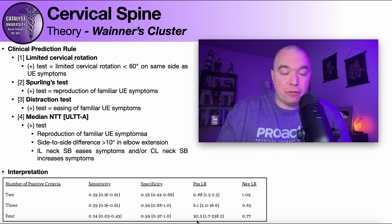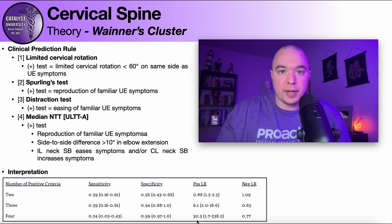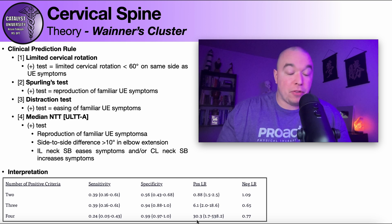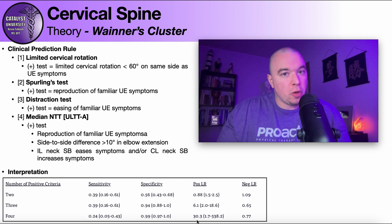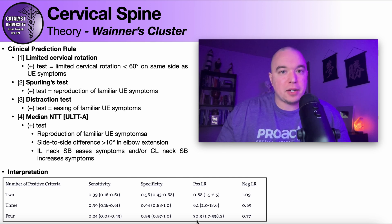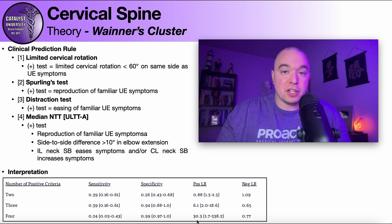When all four tests are positive, the specificity jumps to 99% — there is a 99% chance this person has a cervical radiculopathy — and the positive likelihood ratio is 30.3, which is amazing. So if all four are positive, this is absolutely a cervical radiculopathy. If three are positive, you're still pretty confident and you'll treat this as a cervical radiculopathy.